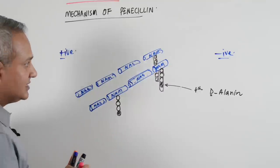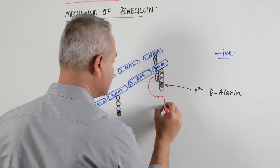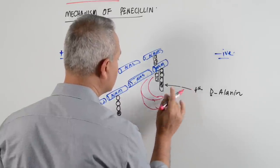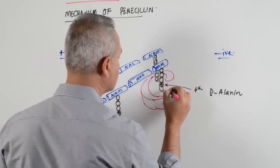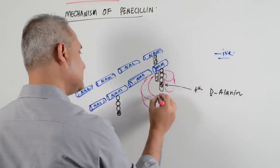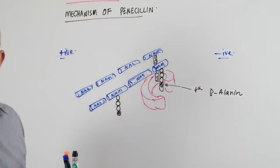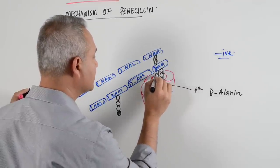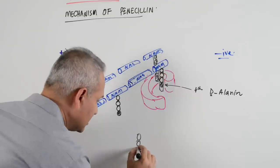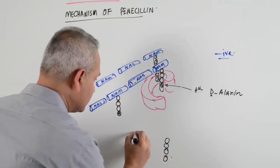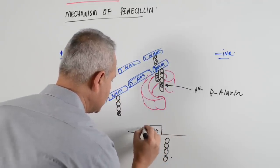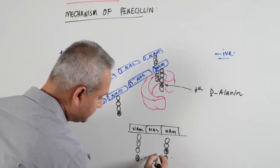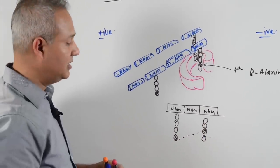There is an enzyme called transpeptidase. What transpeptidase does is it picks up two protein chains that are side by side and creates a cross-link between the fourth amino acid and the third amino acid. So numbering them 1, 2, 3, 4 on each chain - it takes the fourth amino acid and connects it to the third. This function is done by the transpeptidase enzyme.